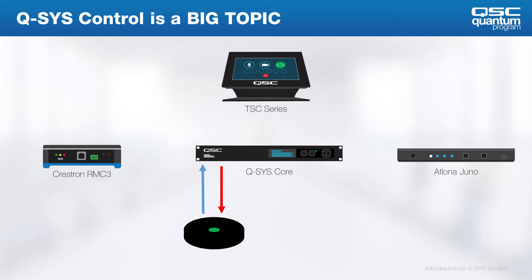Let's start with some basics. Control can be as simple as GPIO for controlling devices such as microphones. We press a button on a microphone when we want to mute it, and then press it again when you want to unmute. GPIO can also control the LED on that microphone to show red for muted and green for unmuted. Then we have QSYS native control with our touchscreens and user control interfaces that can be included as part of the control system.